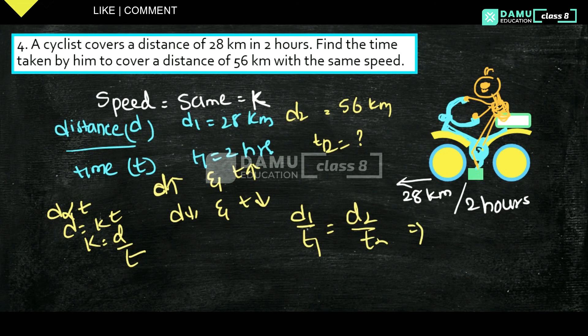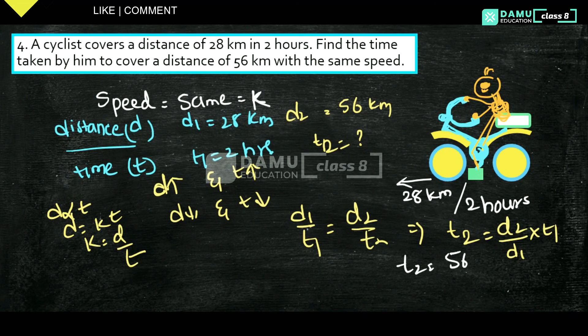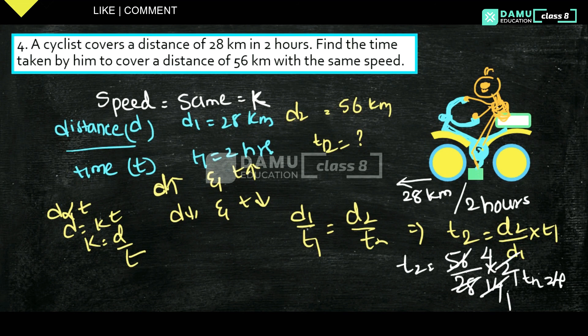Substituting: t2 equals 56 divided by 28 times 2, which gives 2 times 2 equals 4 hours. So t2 equals 4 hours. Thanks for watching, please subscribe.